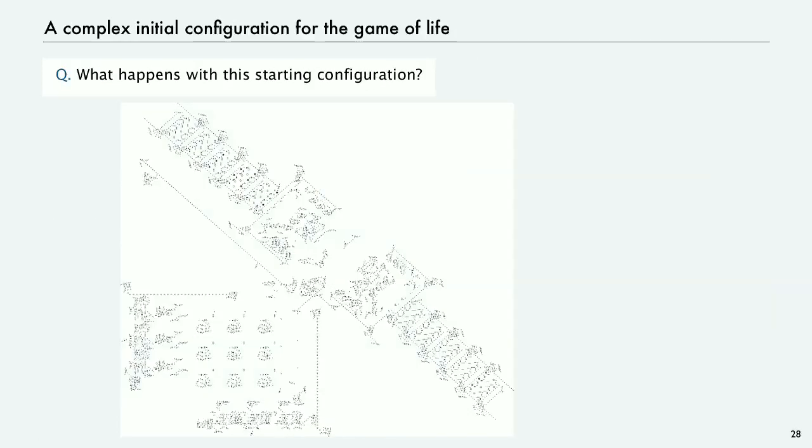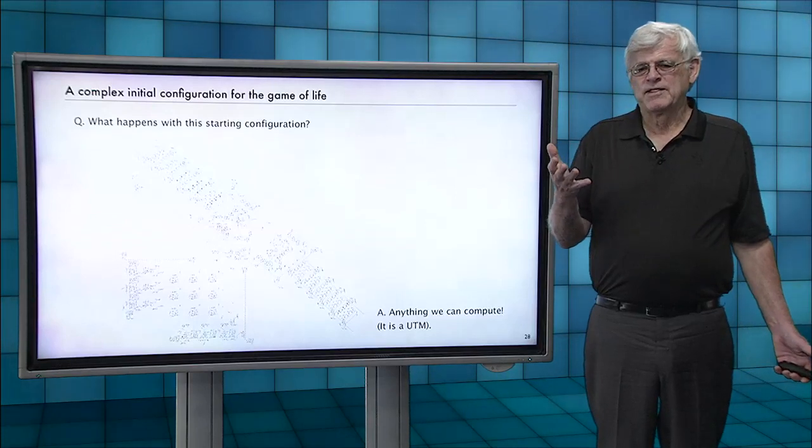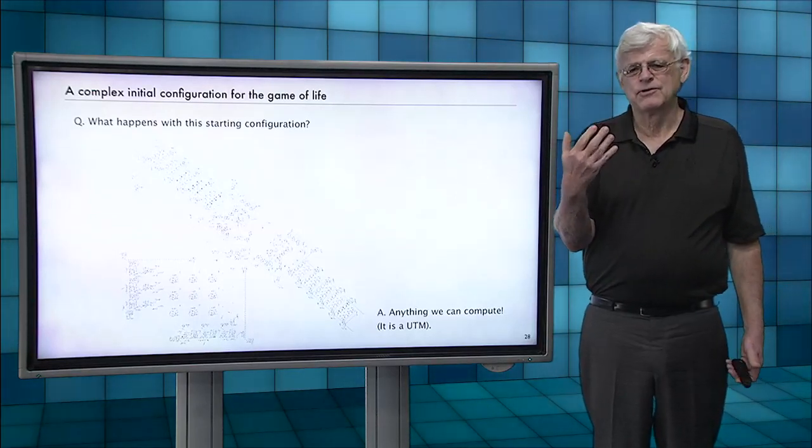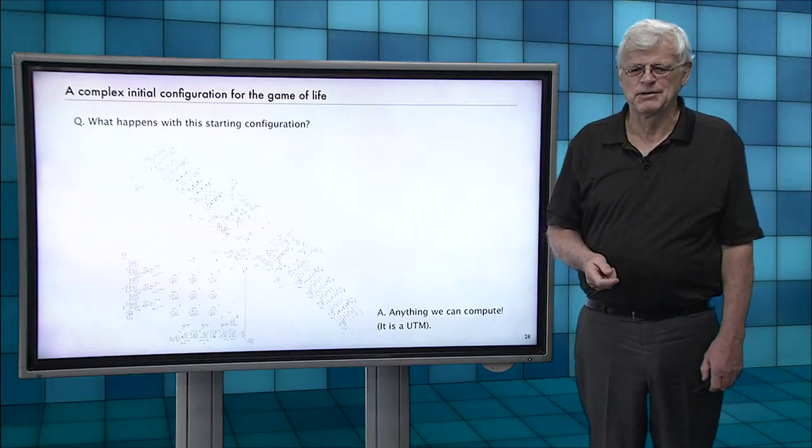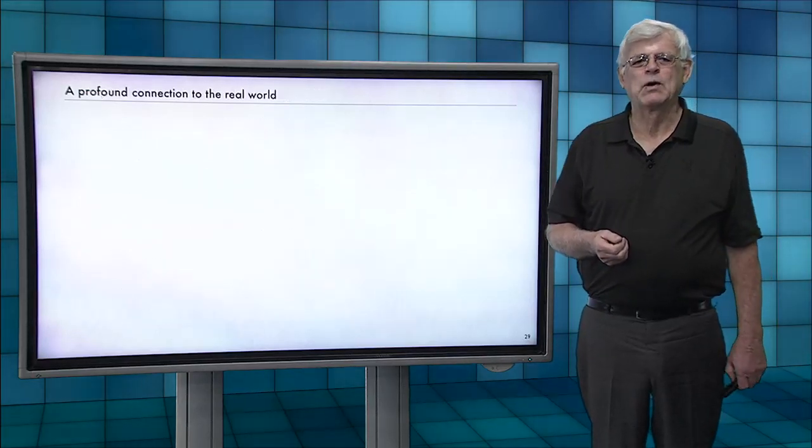So one thing that someone has figured out is what happens if you have that starting configuration? Pretty complicated starting configuration, but if you study it just for a minute. And you can, well, you have to study it quite a bit, but you can understand when I say that actually what that thing is, is a universal Turing machine. You can kind of see the tape going off along the diagonal, and then the state diagram as a little array down in the bottom left. So with the game of life, we can build a universal Turing machine. That means that anything that we can compute, and that's the Turing machine's definition of what we can compute, we can compute with the game of life. It's quite surprising. It's a very profound connection to the real world.